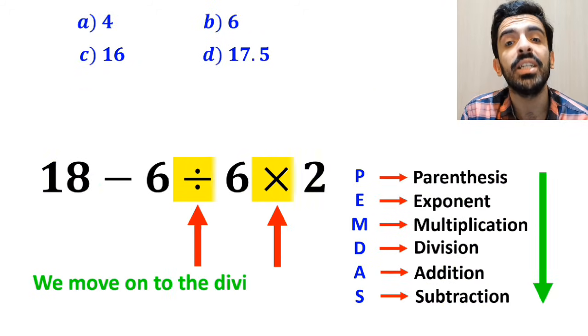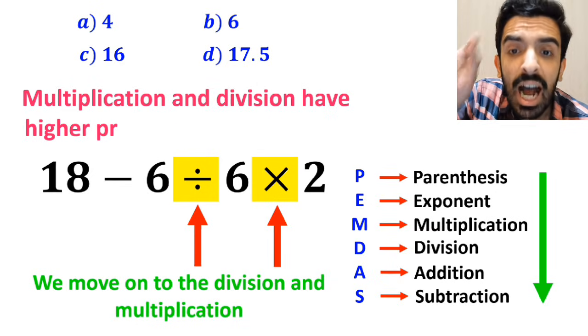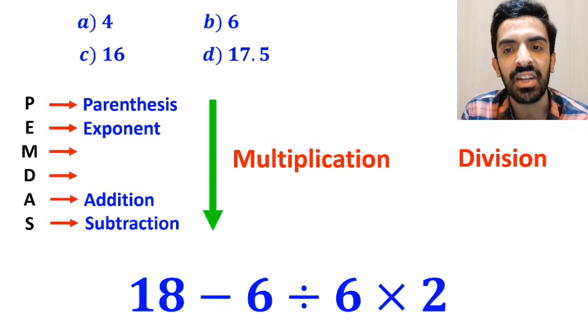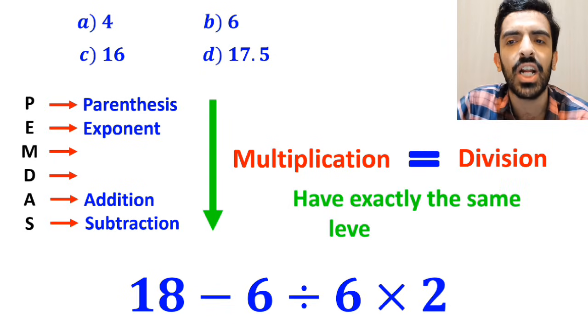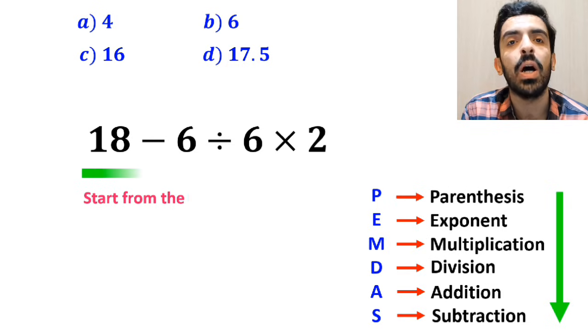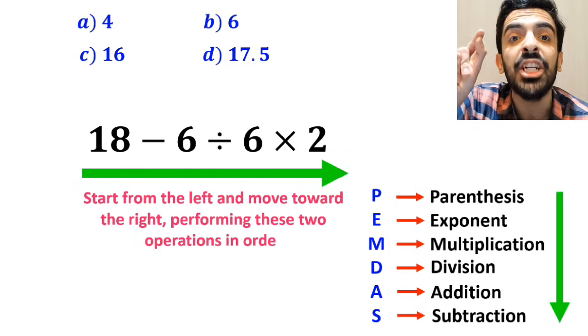And the next step, we move on to the division and multiplication, because multiplication and division have higher priority than subtraction. However, it's very important to note that multiplication and division have exactly the same level of priority. In this situation, the best approach is to start from the left and move toward the right, performing these two operations in order.